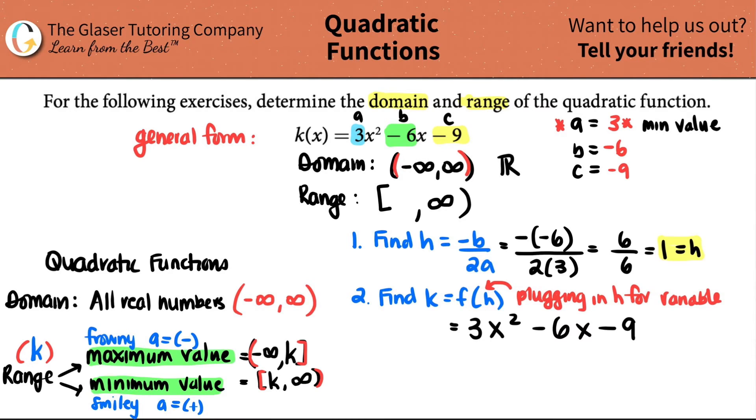All you're doing is you're going to plug in your H value, which was 1, into all of the X values. So this is no longer an X. It is now a 1 because that was my H value. This is no longer an X. This is a 1. And now we just solve the equation by PEMDAS. 1 squared is 1. So 3 times 1 minus 6 minus 9. 3 times 1 is just a 3. So I can just bring this closer. And then I just work from left to right. 3 minus 6 is a negative 3. Minus 9 is you're really adding them together. So negative 3 minus 9 is a negative 12. And that is your K value.